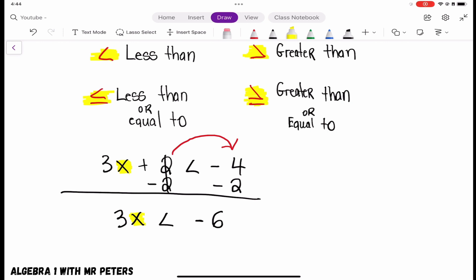So if we want to get this x by itself, we're going to divide by 3. Divide 3 by itself and we're going to go on the opposite side and divide negative 6 by 3.